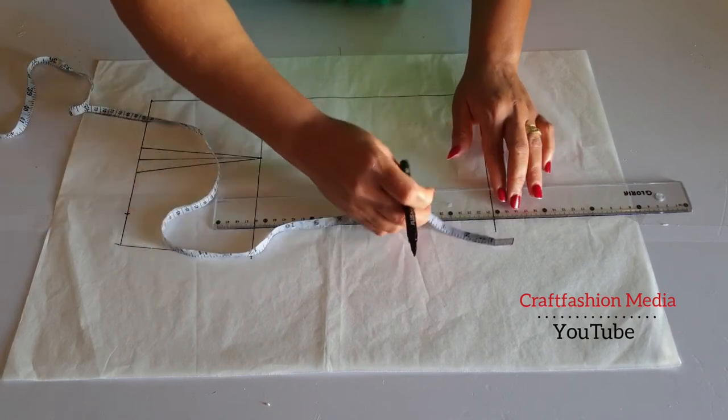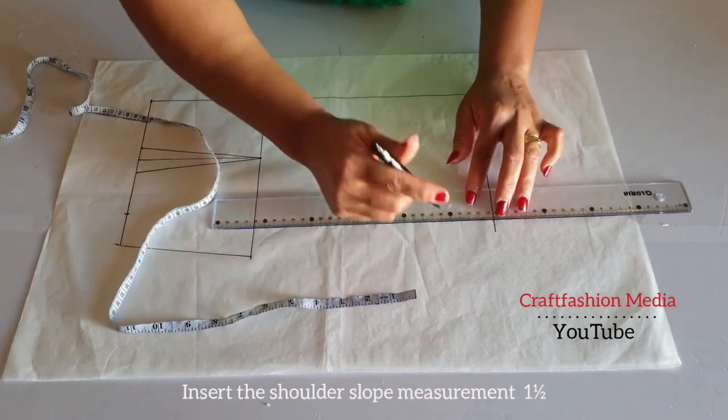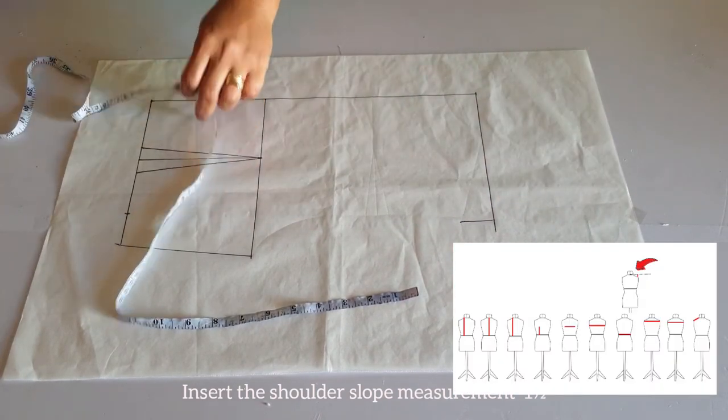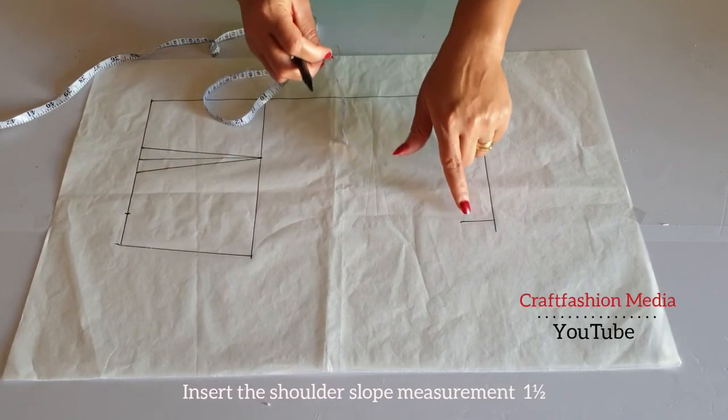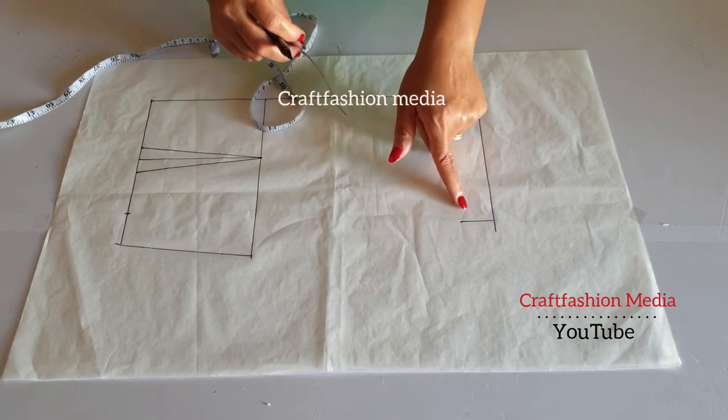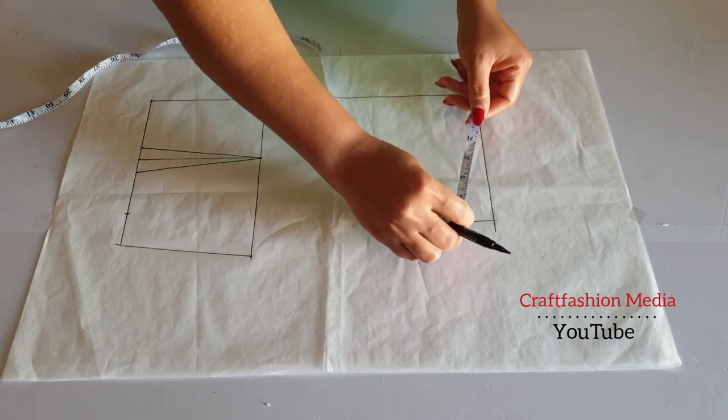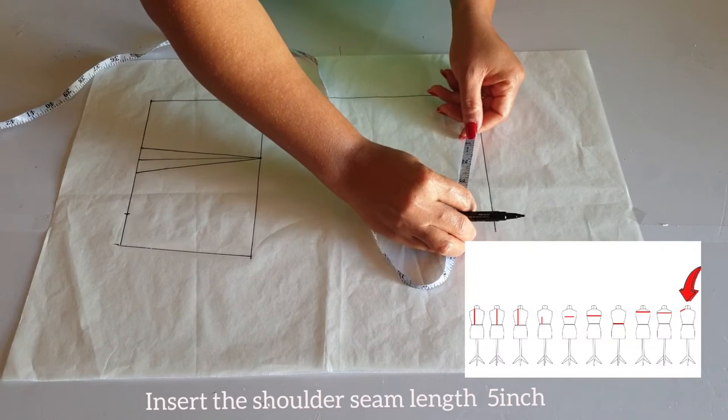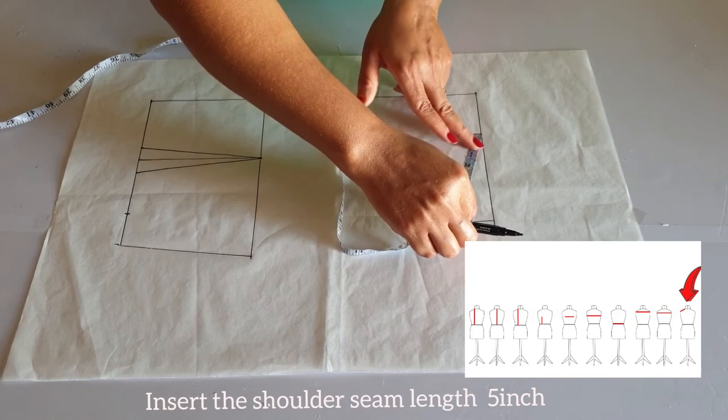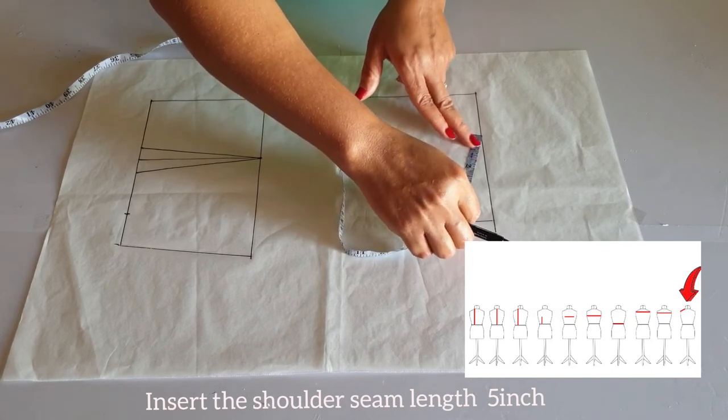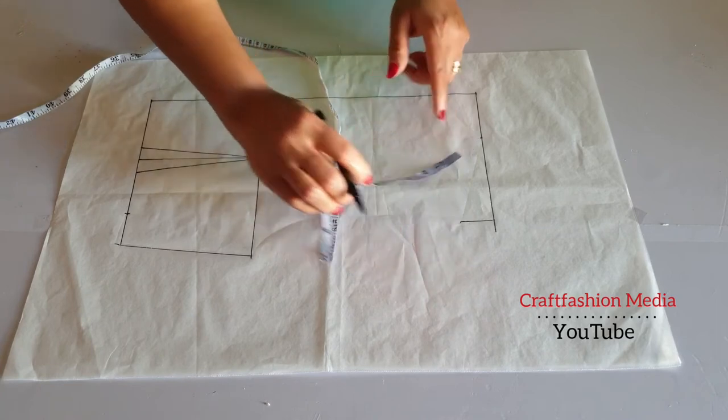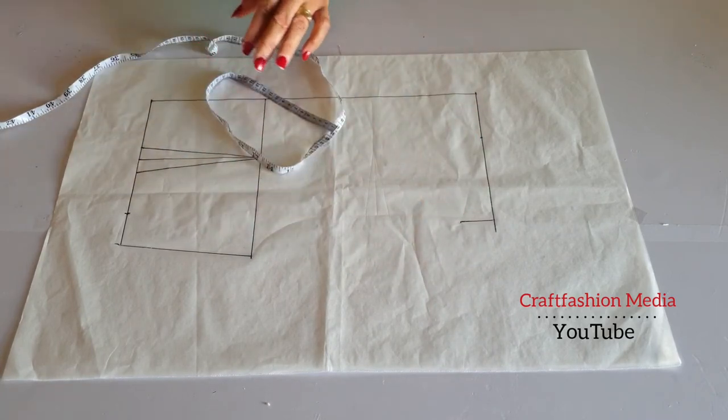I will insert my shoulder slope. If you can remember, we have one and a half inch as my shoulder slope measurement. So now I'm going to insert my shoulder seam length. If you can still remember, we have 5 inches as my shoulder seam length. And I will place 5 inches on my shoulder slope line and rotate it towards the shoulder line to meet the 5 inches, and I will make a mark.